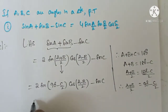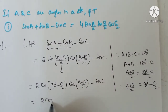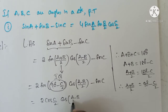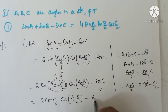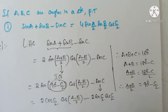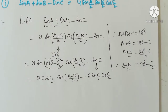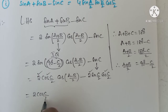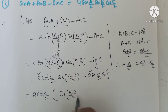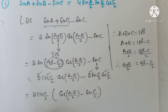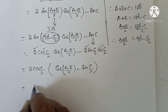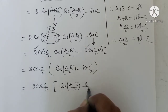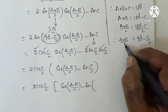For 90 degrees, sin will be converted to cos, since 90 minus C/2 is in the first quadrant where all are positive. So we get 2 cos(C/2) cos((A-B)/2) minus sin C. Now we write sin C as 2 sin(C/2) cos(C/2). Taking 2 cos(C/2) as common, the remaining term inside involves cos((A-B)/2) minus sin(C/2).